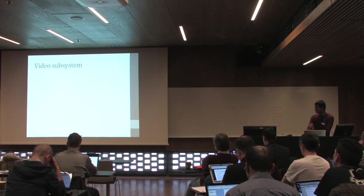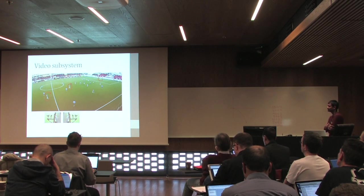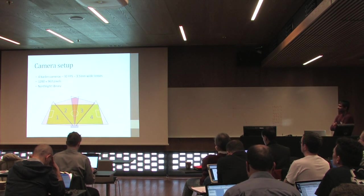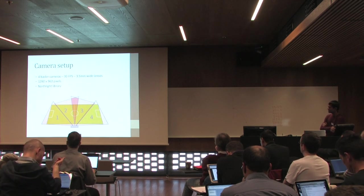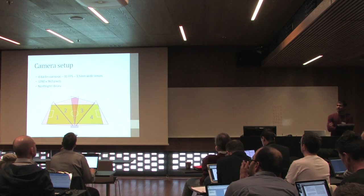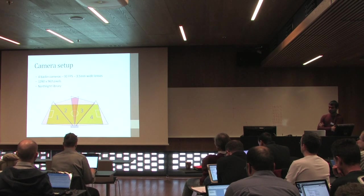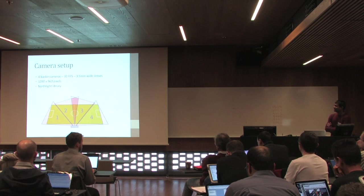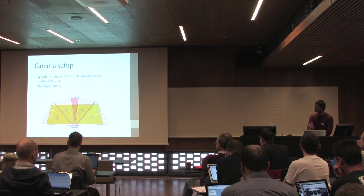For the video subsystem, we need to capture the visual information. The cameras are located about 10 meters away from the field and 10 meters above the ground. We are using four industrial cameras from Basler for prototyping, recording at 30 frames per second with 3.5mm wide lenses. Each camera has a one-third inch sensor capturing 1280 by 960 pixels, which is pretty much HD. We have a library we call Kodak that manages all the capturing, storing, and some of the synchronization protocol, though we still have to look into the details there.